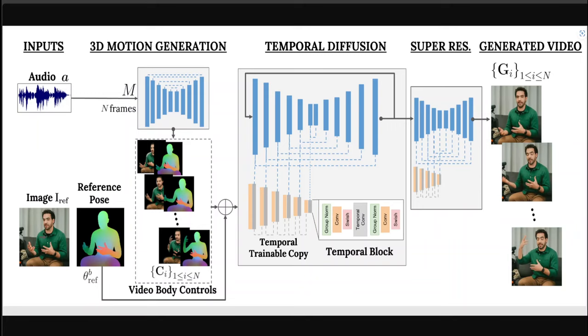The first model generates lip, face, and body motion that is consistent with the input audio. The second is based on a temporal version of ControlNet and creates the video of the target person following the previous motion. Our stochastic approach allows generating multiple plausible motions for a person talking realistically given the same input audio. VLOGGER generalizes to new people and is consistent across multiple diversity metrics.